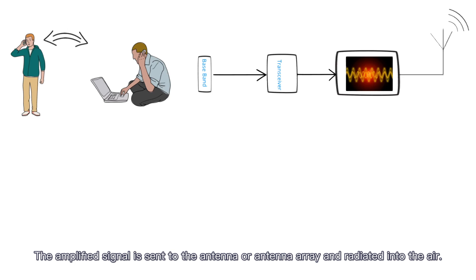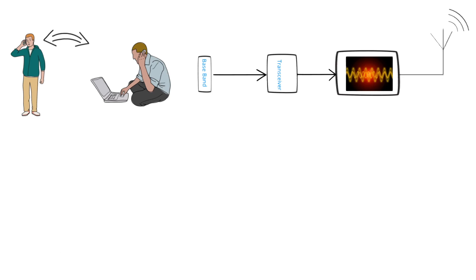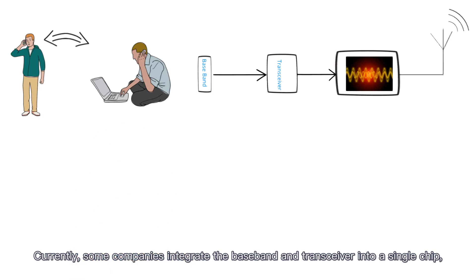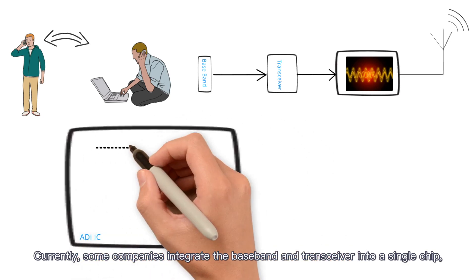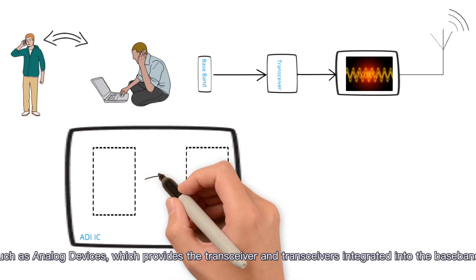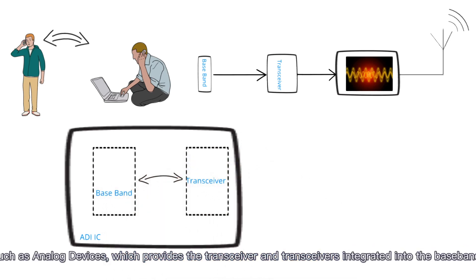The amplified signal is sent to the antenna or antenna array and radiated into the air. Currently, some companies integrate the baseband and transceiver into a single chip, such as Analog Devices, which provides transceivers integrated into the baseband.